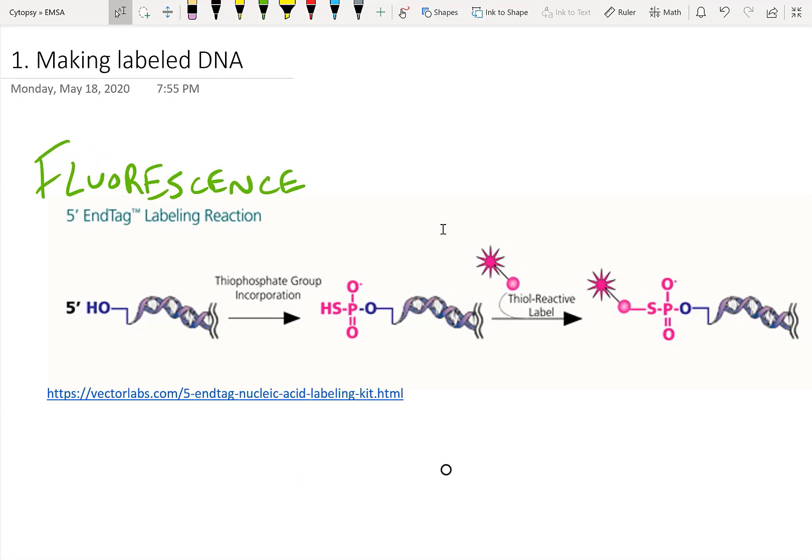The first one shown here is fluorescence. In fluorescence, what you normally do is you take the 5' hydroxyl, and then you add a thiophosphate group onto it. There are labeling kits, just like this one from Vector Labs, that you can do this very easily with. Once you add that thiophosphate on there, you've got a thiol, and you can use a thiol reactive label, and then add a fluorophore onto the 5' end of your DNA. This would label both the 5' ends of your DNA. So that's your first method.